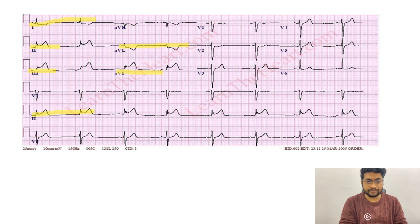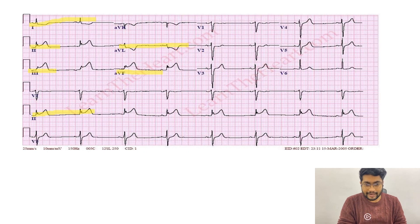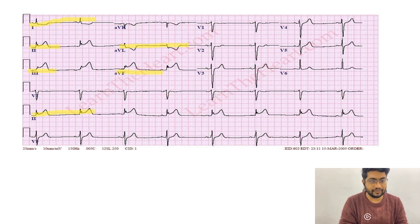A disclaimer: whenever you label an ECG as ST segment elevation of inferior leads, you should always describe whether it is accompanying RV infarct or not. So whenever we say this is inferior wall MI, we also say 'with RV infarct' or 'without RV infarct.' The RCA, which supplies the inferior wall of the heart, also supplies the right ventricle, so with inferior wall MI we can also see RV infarct. We will discuss RV infarct in the later ECGs.